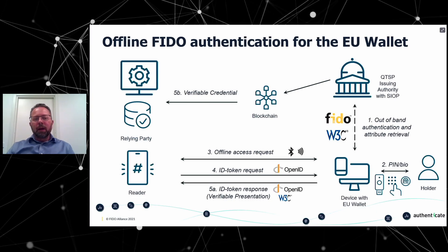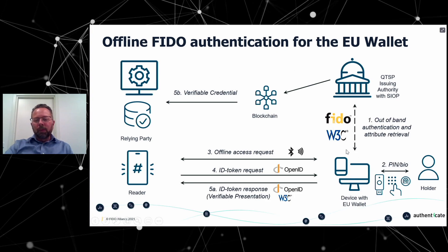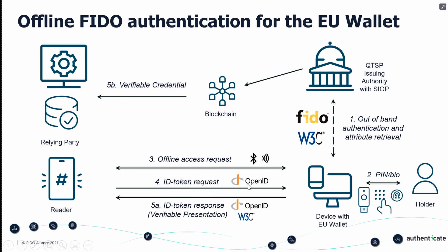Finally, we have the offline authentication scenario. The user uses an out-of-band authentication — FIDO can be used there to retrieve attributes in W3C format. PIN code or biometrics are used for identification. In step three, there is an offline access request over NFC or Bluetooth. In step four, OpenID can be used to get the ID token request. Since credentials have been downloaded, the ID token response can be submitted with a verifiable presentation to the reader, where it is verified with a credential.